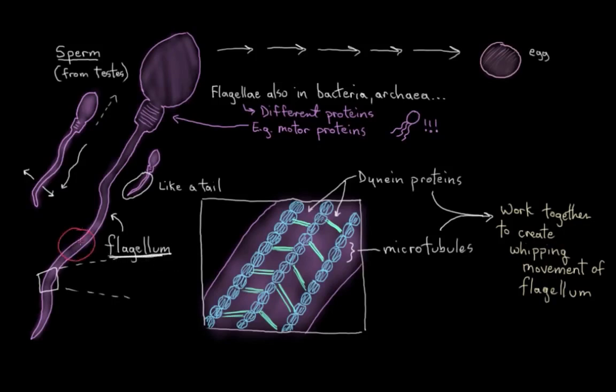So our flagella are one of the ways our cells can move around. And in fact, if your sperm couldn't move around properly, let's say if your flagella failed to form properly, like you might see in certain diseases, it'd be a lot harder for your sperm to get to an egg to fertilize it, right? So already you can see movement in sperm is just critically important.